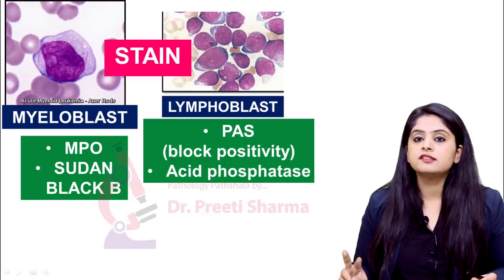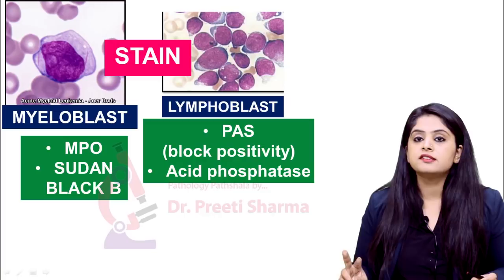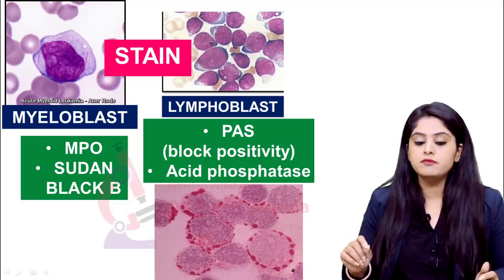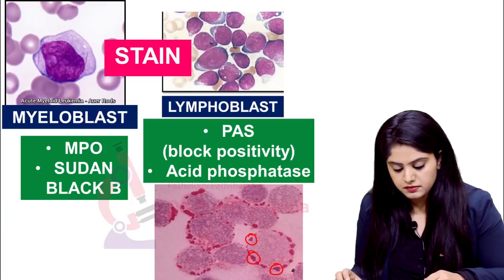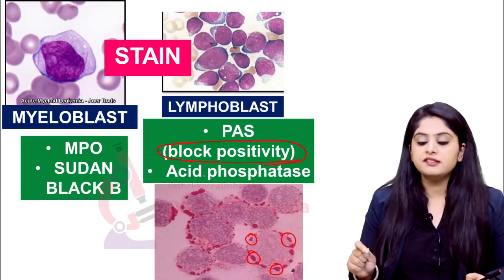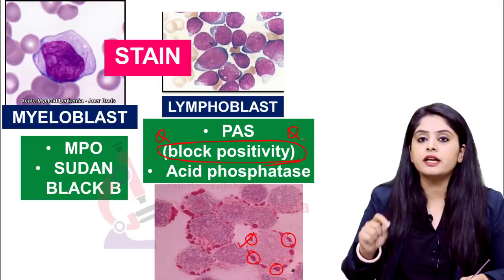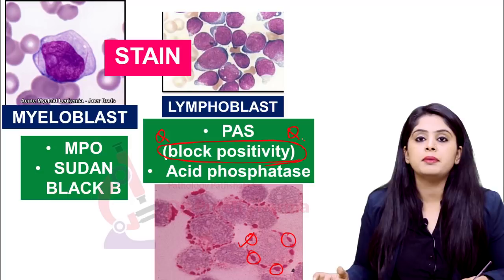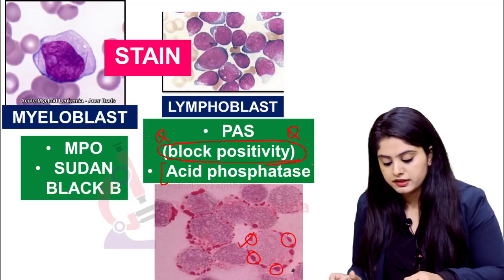Whereas for the lymphoblast, we have two important stains. One is the PAS stain — the periodic acid Schiff stain. A PAS stain of a lymphoblast is going to characteristically show these blocks — this is the block positivity that is seen. PAS stain block positivity is one of those favourite questions not only in entrance exams but also for second-year MBBS students in practical exams — that one pass-and-fail question in hematology: block positivity, PAS stain for a lymphoblast.